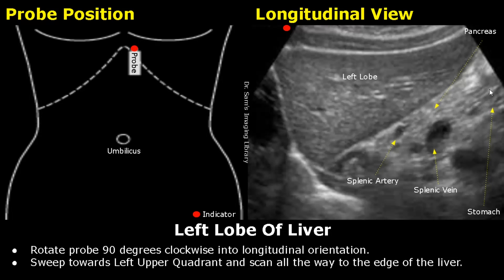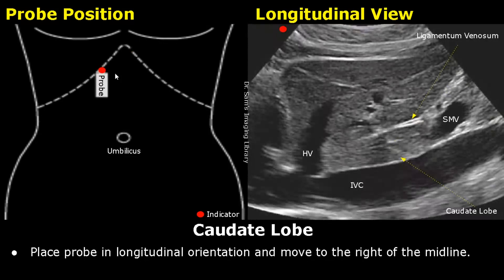The stomach will look like a structure with alternating bright and dark layers. Now move to the right of the midline and you can locate the caudate lobe of the liver. This is the caudate lobe right behind the ligamentum venosum. This large vessel is the inferior vena cava — it is the IVC because it is to the right of the midline. This is the hepatic vein draining into the IVC. This anechoic structure is the superior mesenteric vein.